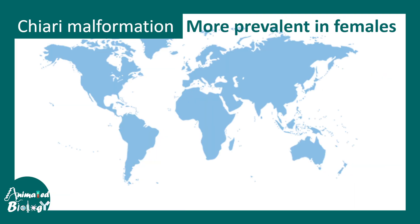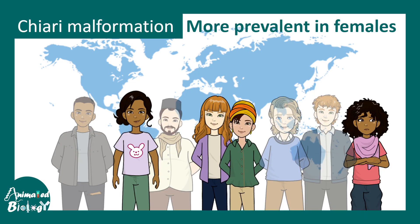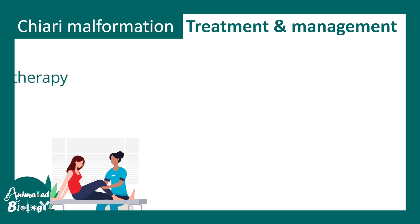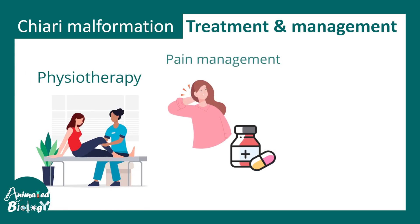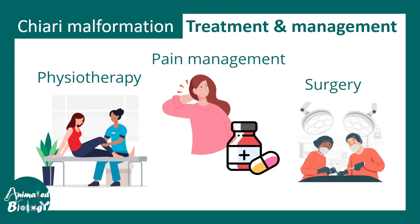Chiari malformation can happen to any individual from any ethnicity, but it has been seen that the prevalence is somewhat more in females. The reason behind that is not really known, but people think there is a genetic component associated with it. When it comes to treatment, symptoms can be managed with physiotherapy and pain medications, and sometimes surgery is required for extreme cases.